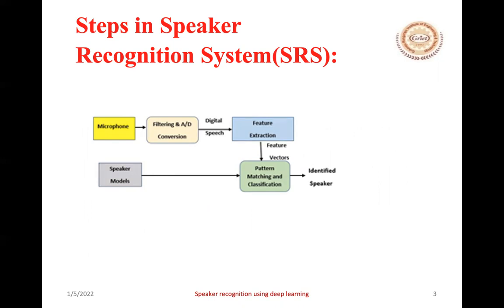From the digital speech, feature extraction happens. Features are saved in the form of vectors and those features are matched through pattern matching and classification methods. Some speaker audio samples are saved in the form of speaker models. The extracted feature vectors are compared with speaker models, classified, and finally the speaker is identified and verified. These are the steps involved in speaker recognition.